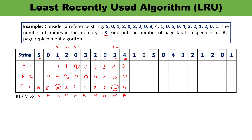Next digit is 1. 1 is not available — condition of miss. Before 1, 4 was used and 3 was used. So 0 is the least recently used and will be replaced by 1. Frames become 3, 4, 1. Next digit is 0. 0 is not available — condition of miss. Before 0, 1 was used and before that 4. So 3 will be replaced by 0. Then digit 5 comes — also a miss. Before 5, 0 was used and before that 1, so 4 will be replaced by 5. Frames are now 1, 0, 5.